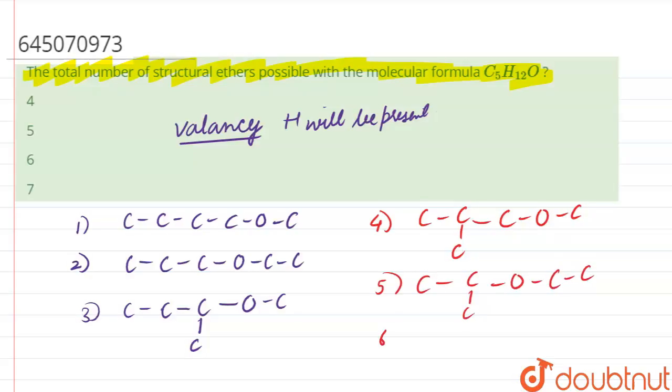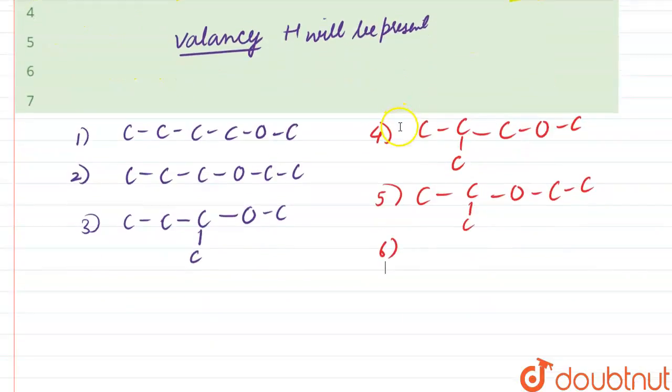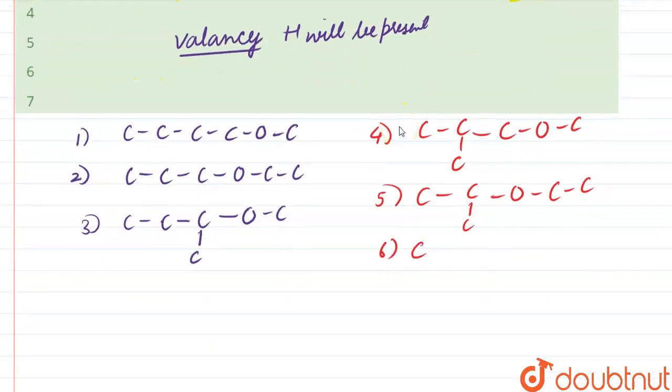The next isomer will be something similar to this, with two C over here, that is two methyl groups, and over here a C. Basically we have